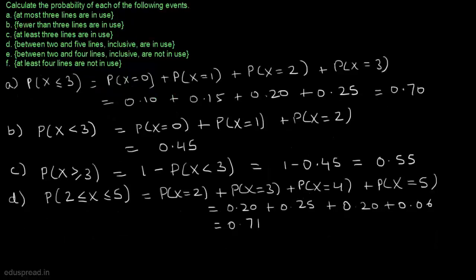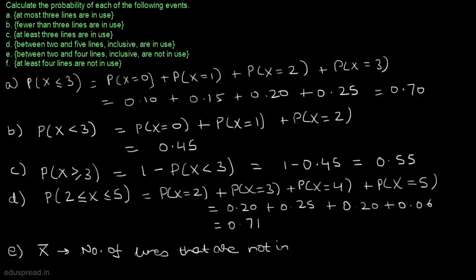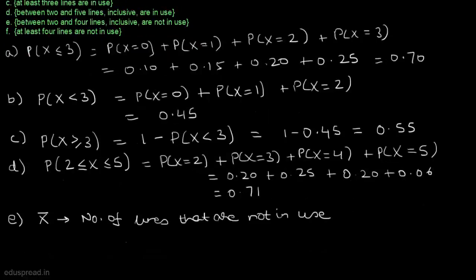In part E, we have to calculate the probability that between two and four lines inclusive are not in use. If we define X as the number of lines in use, then we can define X̄ as the number of lines that are not in use. X̄ will be equal to 6 minus X, since there are six lines in total.